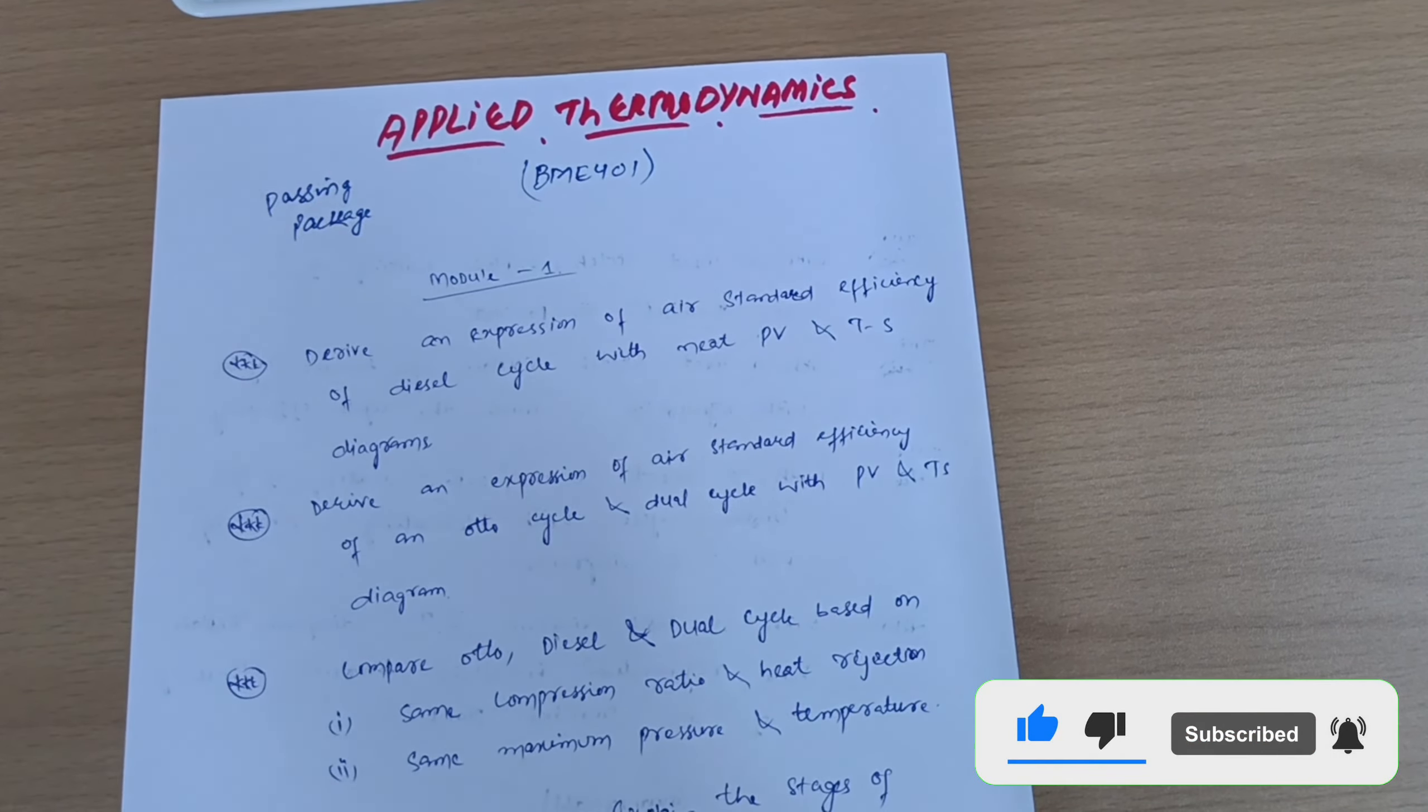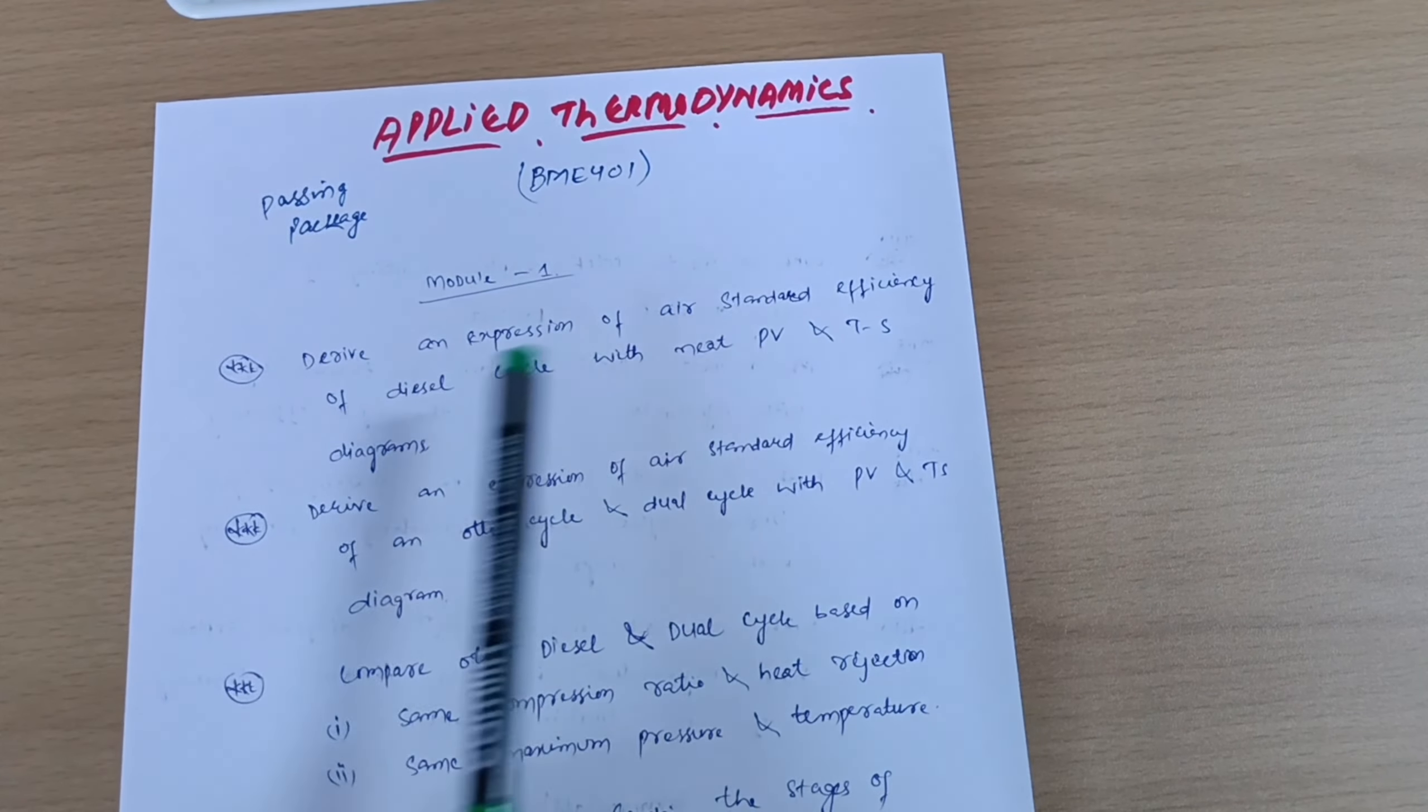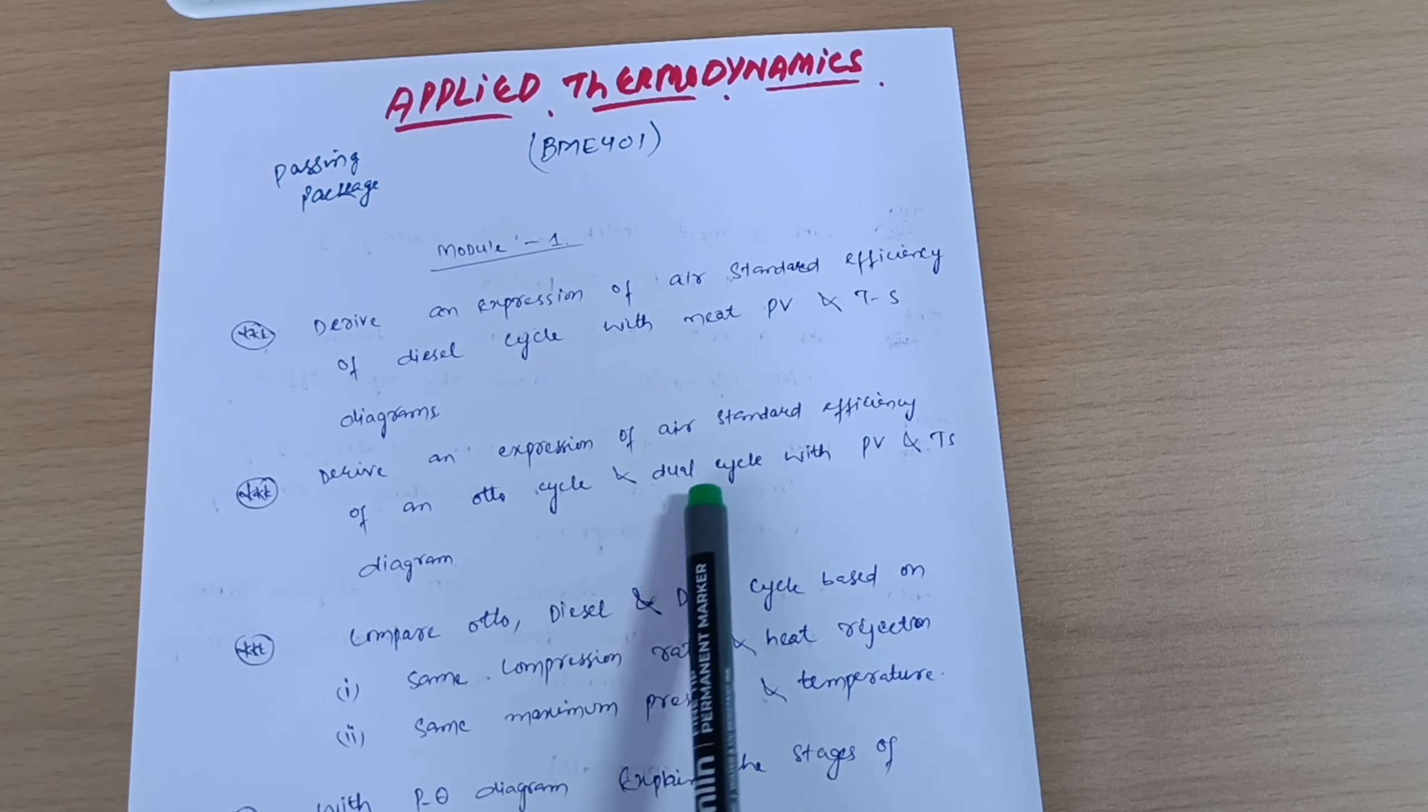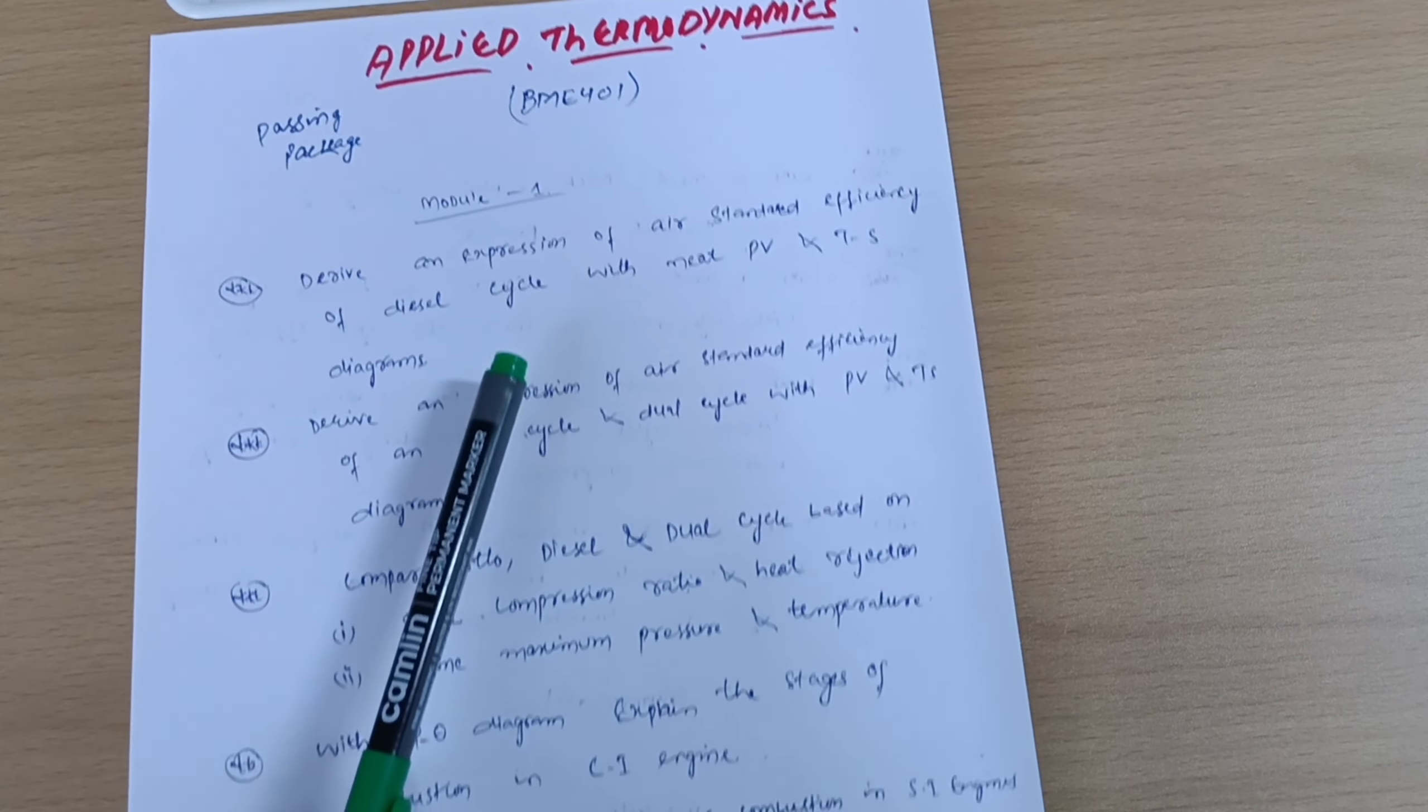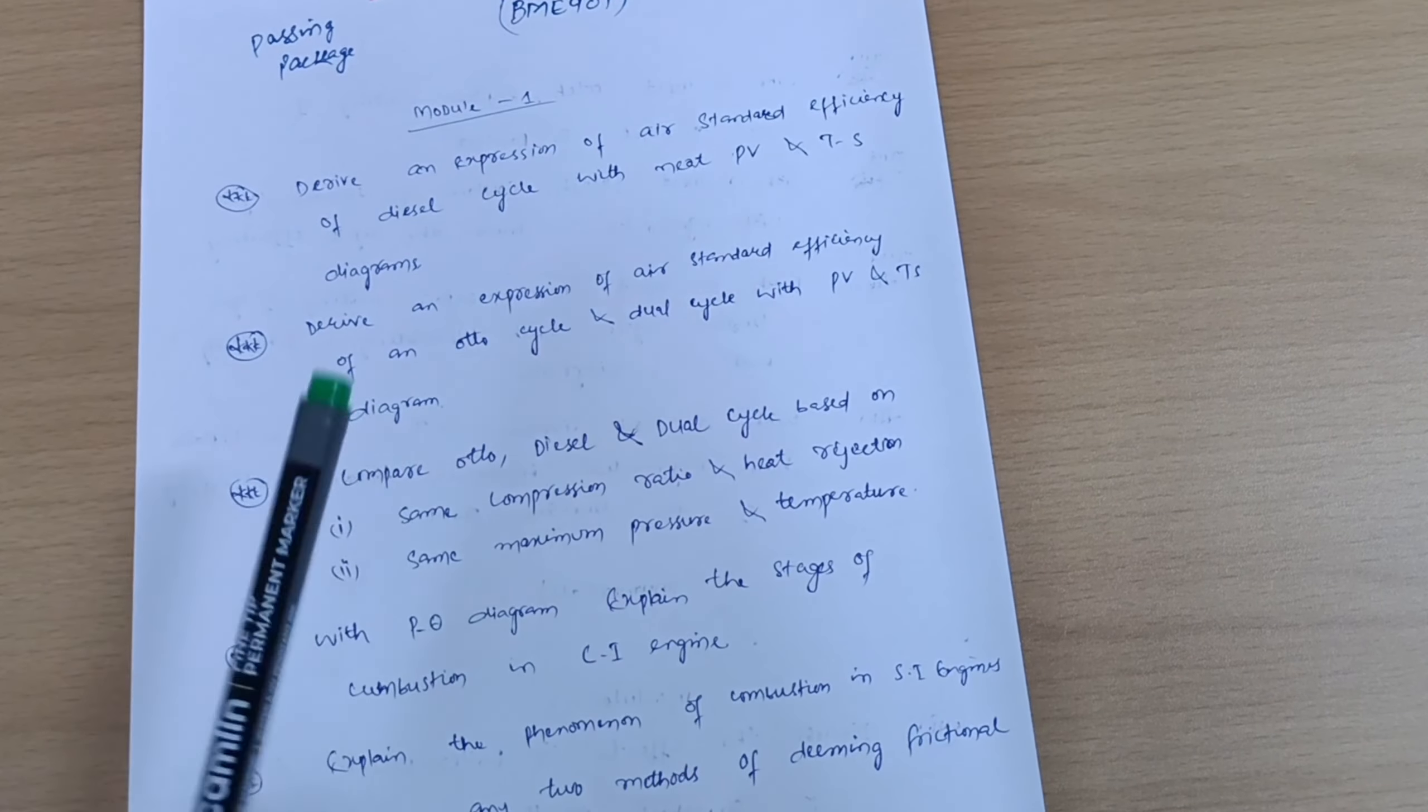So that you can pass Applied Thermodynamics with ease, okay? First of all, let me discuss Module 1, in which you have to cover questions like: derive an expression of air standard efficiency of a diesel cycle with neat PV and TS diagrams, and also expression of air standard efficiency of an Otto cycle and dual cycle with PV and TS diagrams. These three questions are super important questions they may ask in the examination, so you have to be fully prepared.